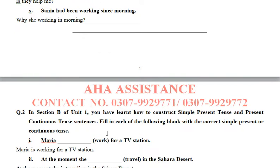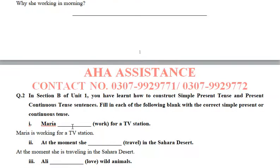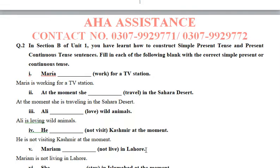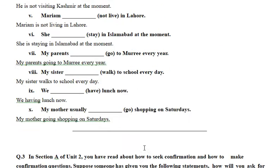In question number 2, you have to fill in blanks using simple present or continuous tense. In the continuous tense, you use the '-ing' form. For example: 'Maria worked for a TV station' becomes 'Maria is working for a TV station.' Similarly, 'At the moment she dashes in the Sahara Desert' becomes 'At the moment she is traveling in the Sahara Desert.' In this way, you can complete the exercise.